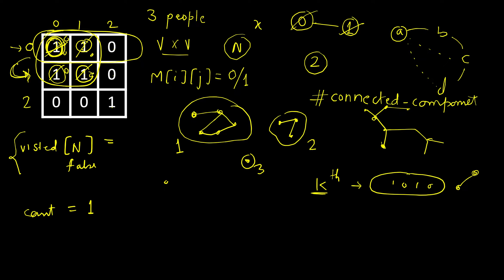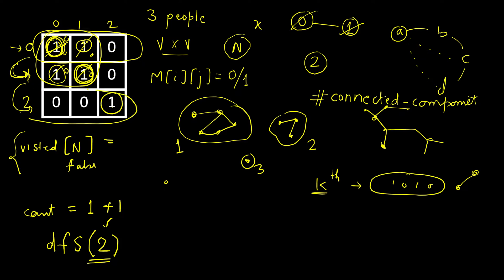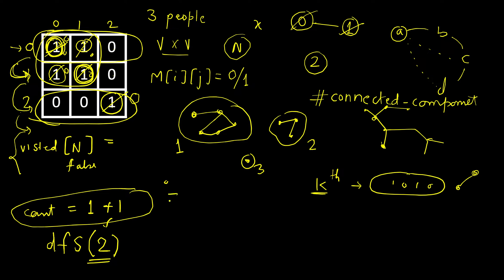We check the next row. Row 0 has diagonal 0 — already visited. Row 1 has diagonal 0 — already visited. Row 2 has diagonal 1 — not visited yet. So we increment the count and start a DFS from node 2. We look at row 2, mark its entry as visited, and find no other neighbors. No more rows remain, so we return. The count is 2 — that is the number of connected components.